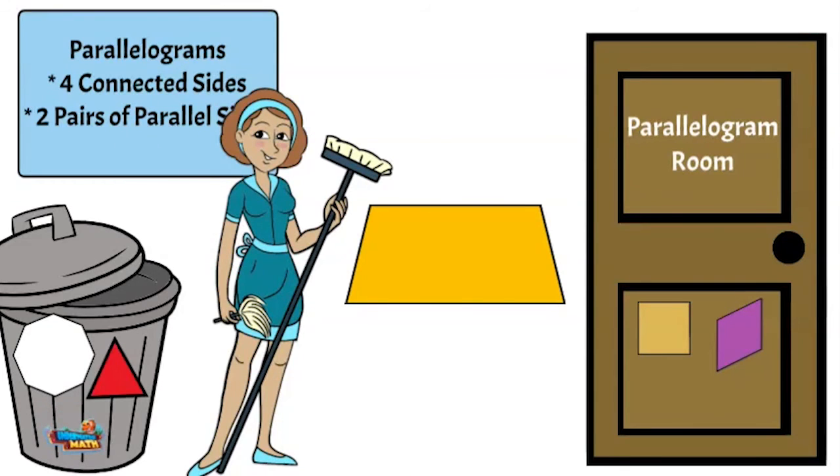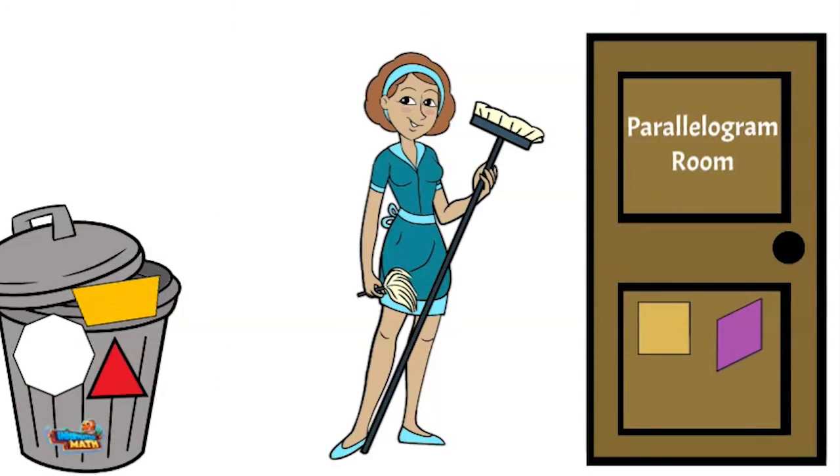Last but not least, we have a trapezoid. A trapezoid has four sides. It's looking good for it right now. Oh man, he only has one set of parallel sides. A trapezoid is not a parallelogram. Out he goes.